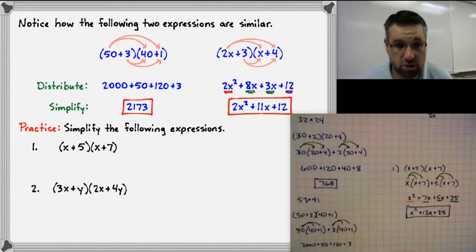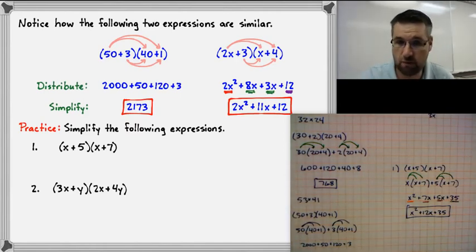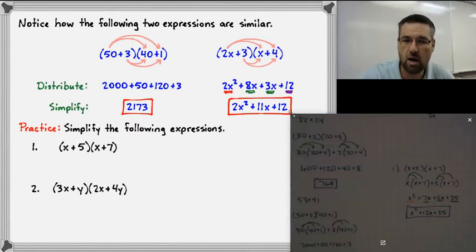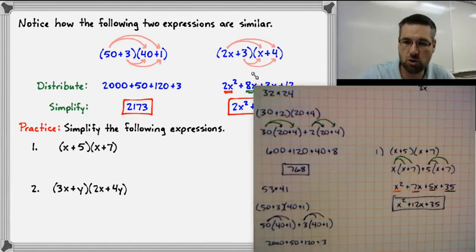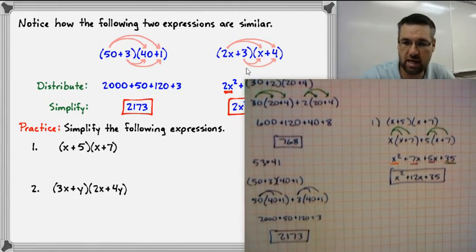Combining like terms: x squared is the only term with that exponent. Then 7x plus 5x is 12x. And 35 is all by itself, so we write plus 35. Final answer: x squared plus 12x plus 35.